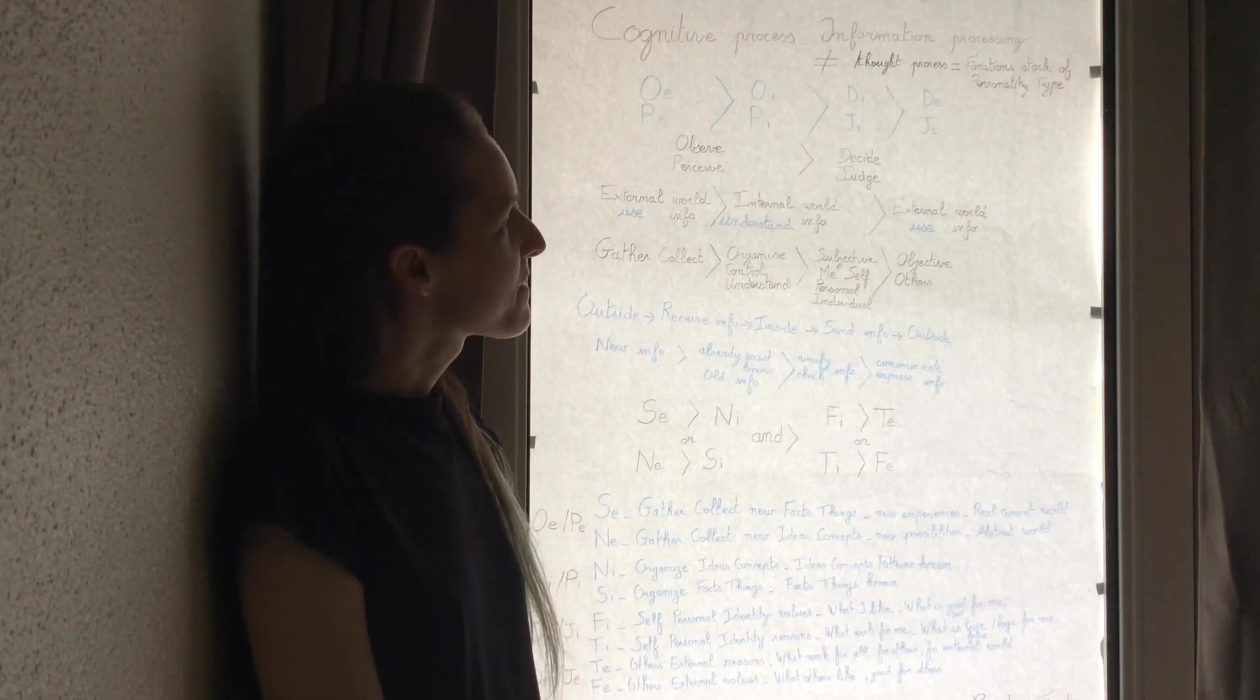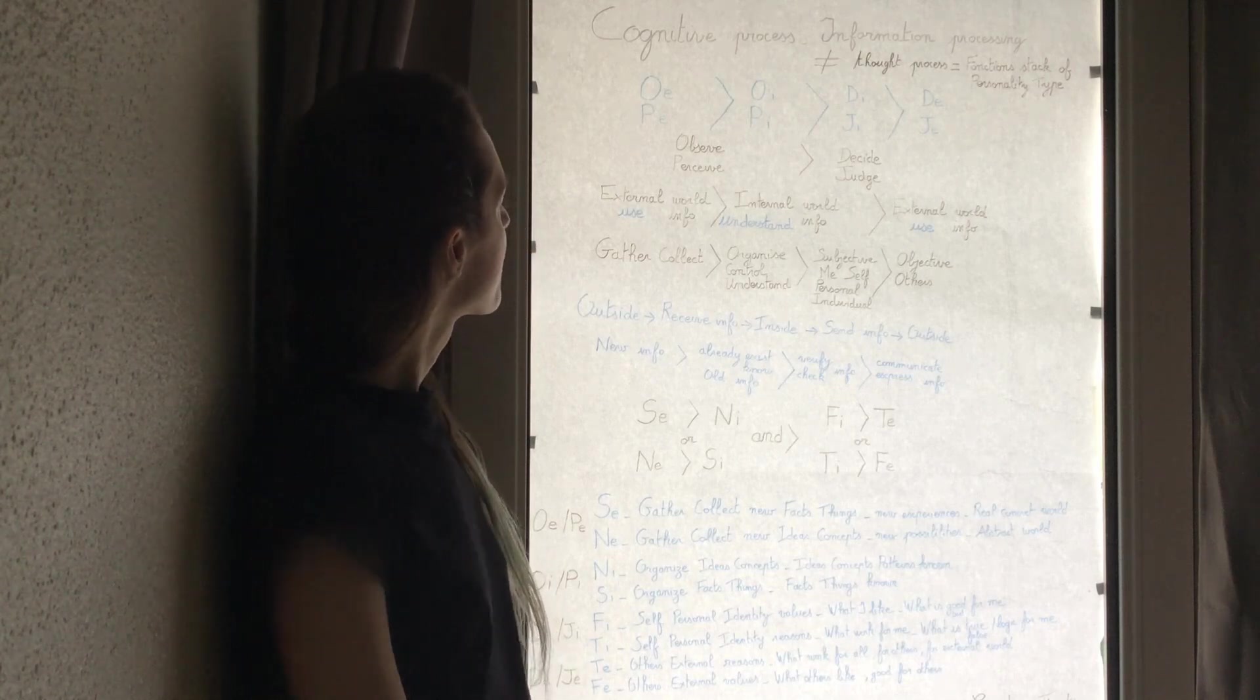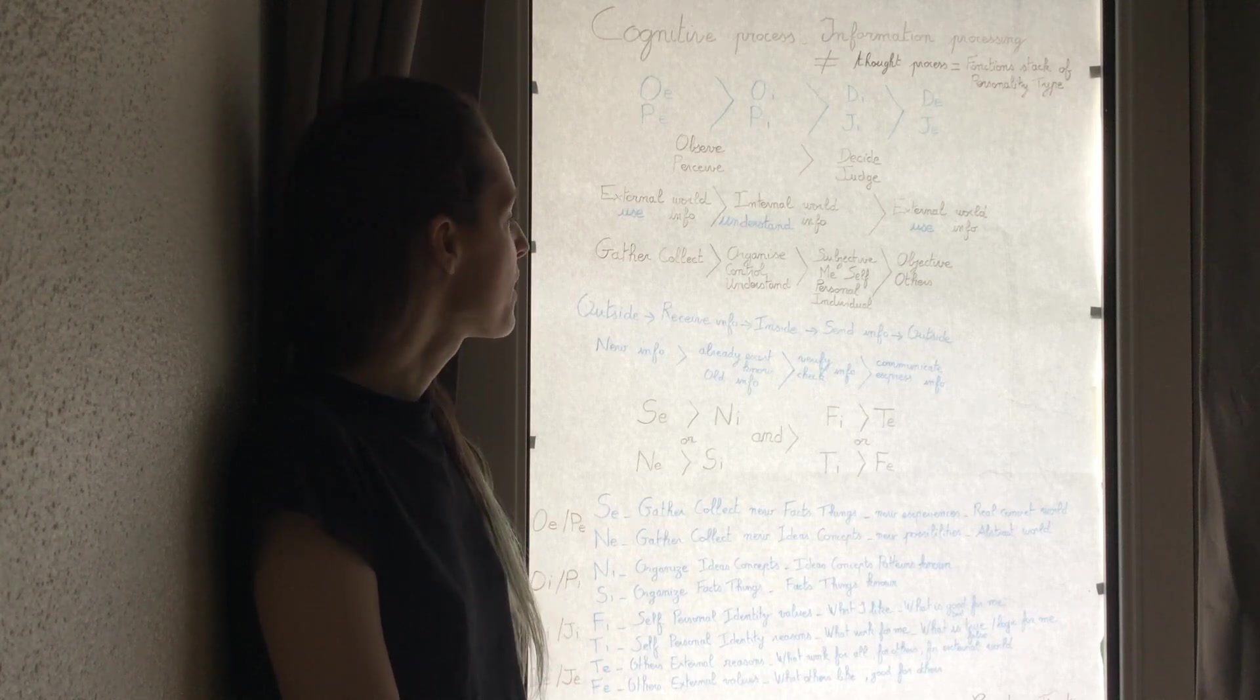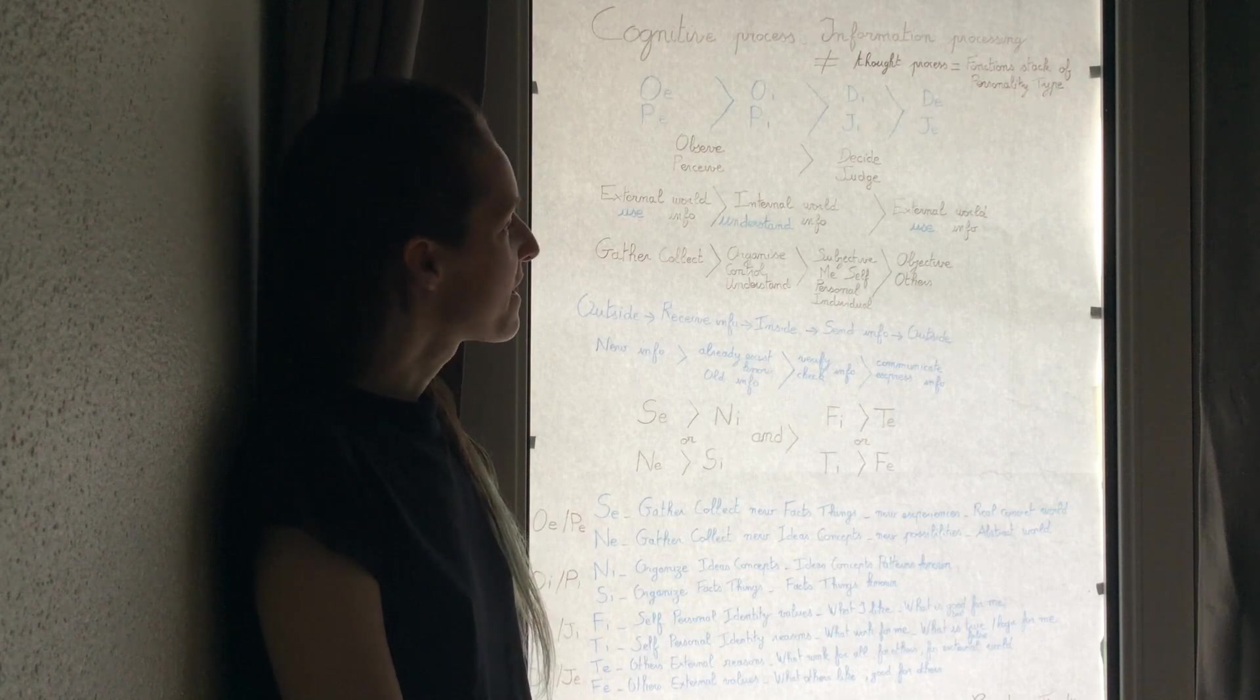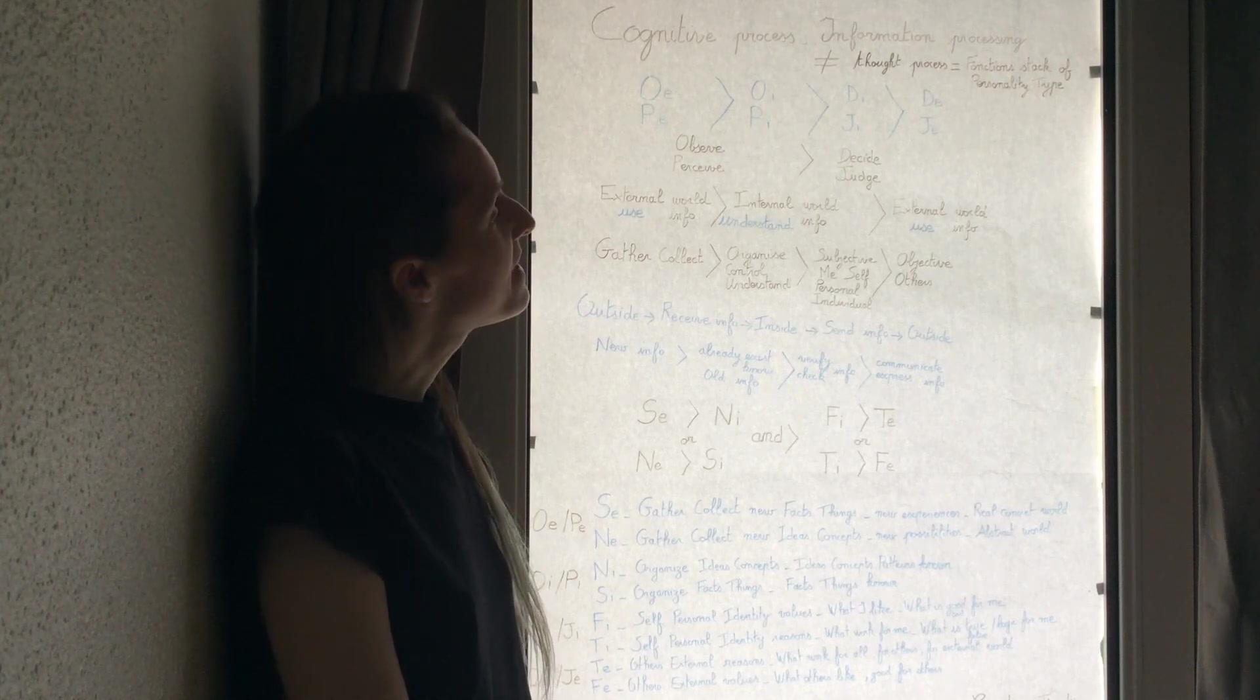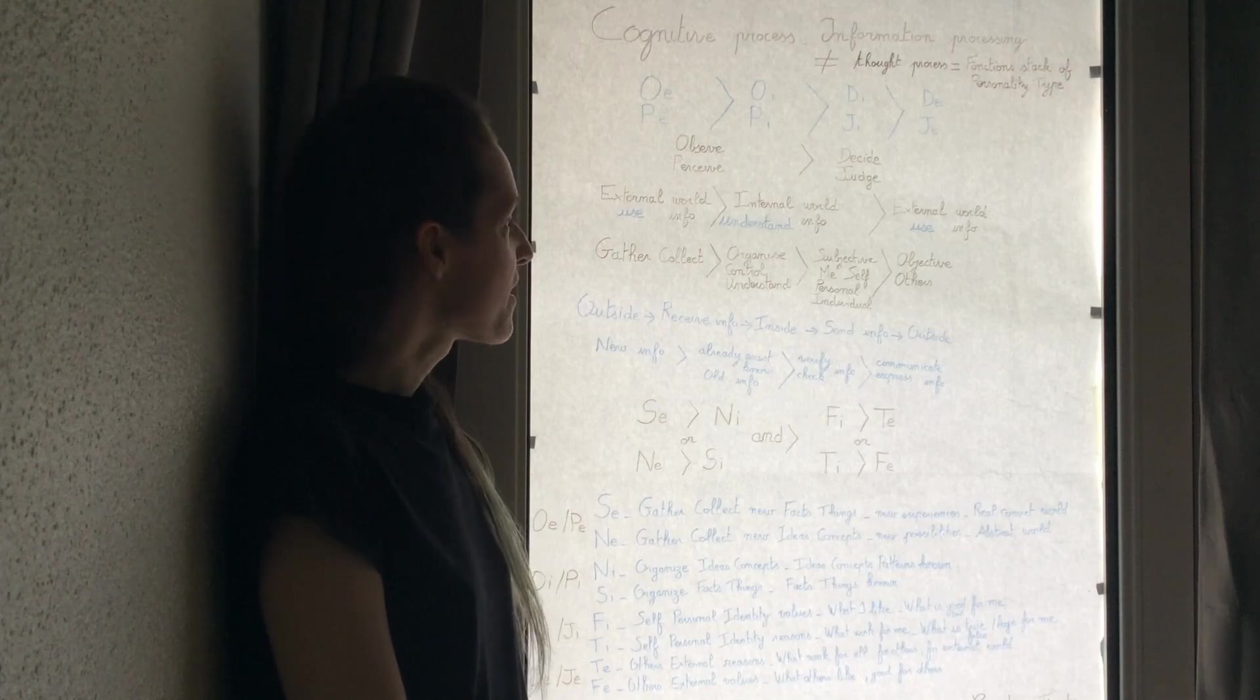We observe, perceive, and after we decide and judge. The information is in the external world, we use the information, and it is in the internal world, in us, we understand the information. And to finish, in the external world again, we use the information.